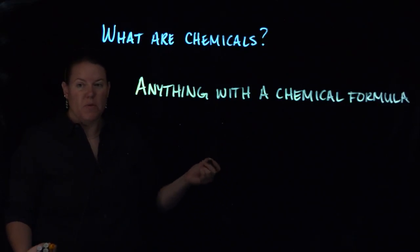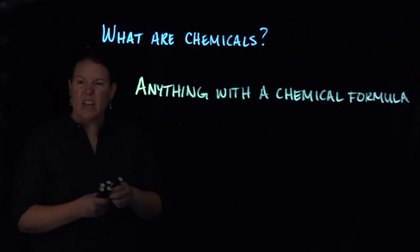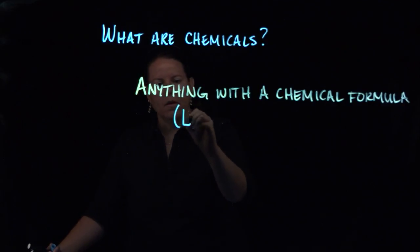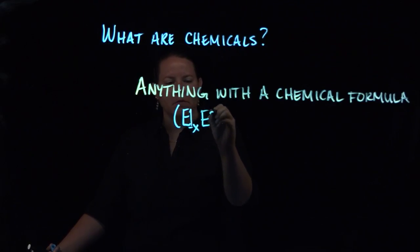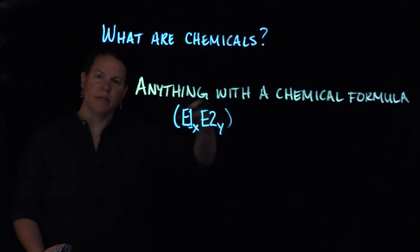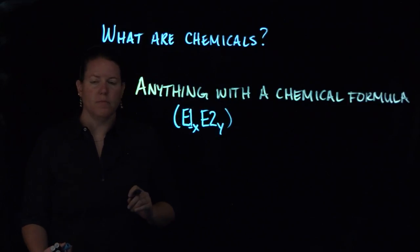But basically when we talk about a chemical formula what we mean is some element and some number of atoms of that particular element. We'll call this element one perhaps. And then another element and some number of atoms of that element. And the list could go on and on of what those formulas would look like.